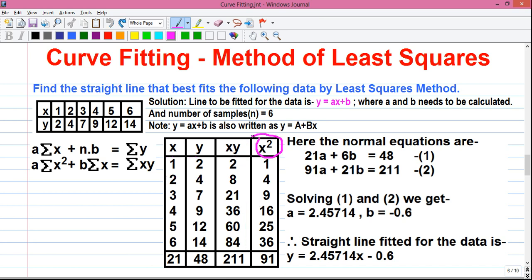Next is x square values. So in our first row, x is 1, so x square is also 1. In our second row, x is 2, so x square is 4. Similarly, we can find out the remaining x square values.